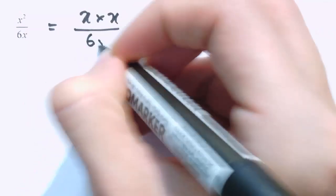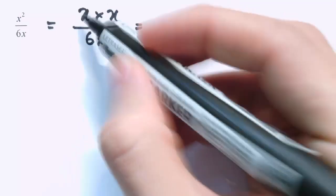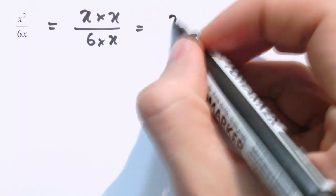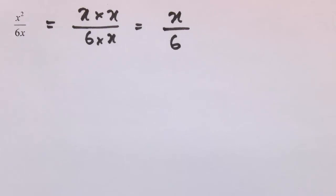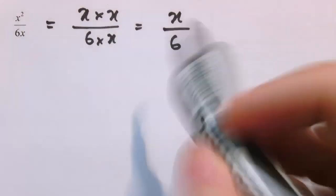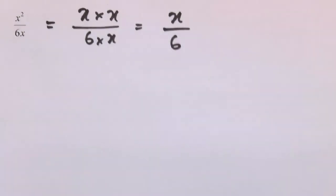Here we've got x squared divided by 6x. x squared over 6x has a factor of x top and bottom, because x squared is x times x, and the bottom is 6 times x. So we can divide top and bottom by one of those x's and leave it as just x over 6. And I keep saying x divided by 6 or x over 6 — I hope you realise that these are just the same things.